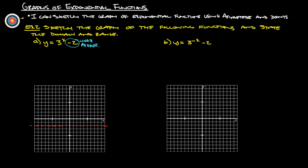The other thing we're looking for is the y-intercept. We know the y-intercept is when x equals zero. So y equals three to the zero minus two. Anything to the zero power is one, so that's one minus two. Our y-intercept is negative one.